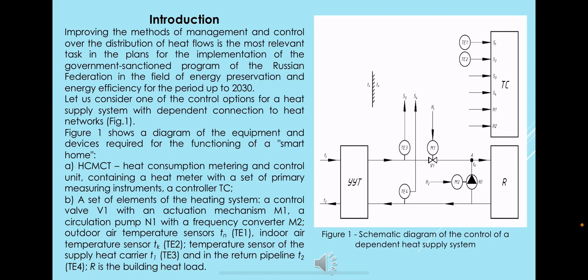HCMCT is the heat consumption metering and control unit containing a heat meter with a set of primary measuring instruments, a controller TCB, a set of elements of the heating system, a control valve V1 with an actuation mechanism M1, a circulation pump N1 with a frequency converter M2, outdoor temperature sensors, indoor air temperature sensors, and other parts of the system shown in Figure 1.